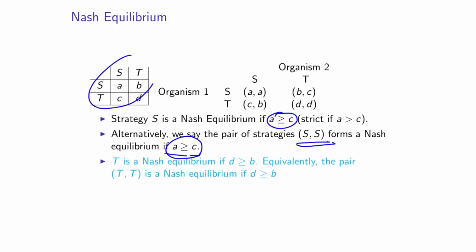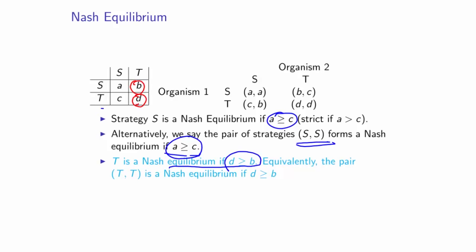For the other strategy, we say that T is a Nash Equilibrium by comparing the values D and B. We say that if D is greater than or equal to B, then T is a Nash Equilibrium, or equivalently the pair T comma T is a Nash Equilibrium if D is greater than or equal to B. We can also apply the definition of strict Nash Equilibrium, which applies if you have a strict inequality.